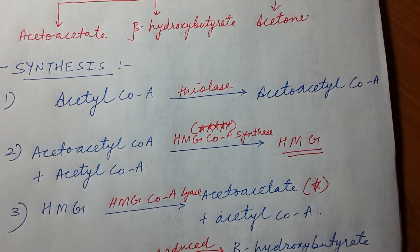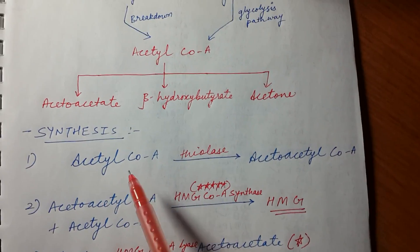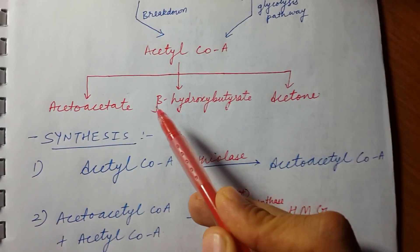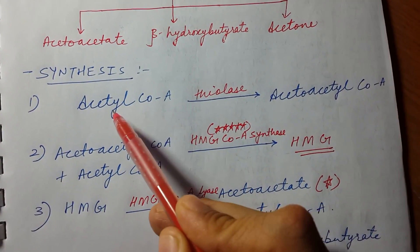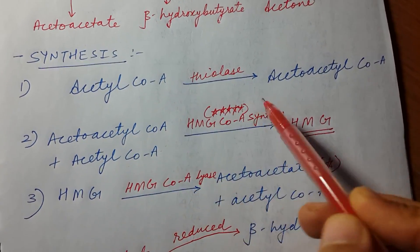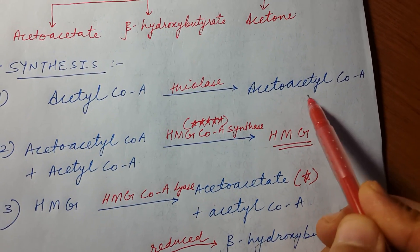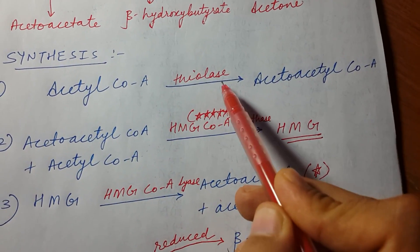Now we will discuss the steps involved in the synthesis of ketone bodies. As we said, for the synthesis of ketone bodies we require acetyl coenzyme A. So first, the acetyl coenzyme A is converted to acetoacetyl coenzyme A by the enzyme thiolase.